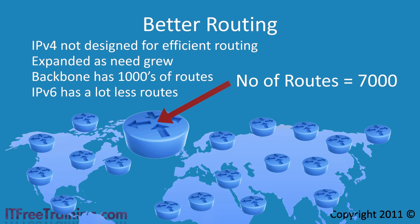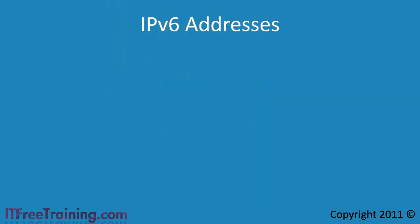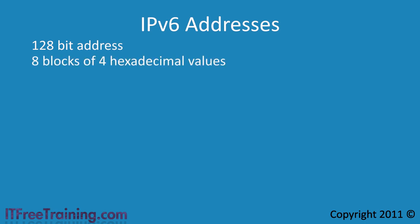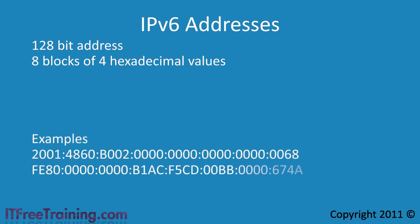To understand IP version 6 better, let's have a look at how IP version 6 addresses are configured. IP version 6 uses a 128-bit address which is 8 blocks of 4 hexadecimal values. For example, the following addresses shown on screen. IP version 6 addresses are not the easiest addresses to look at and are definitely hard to remember.